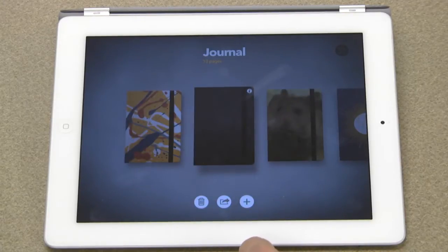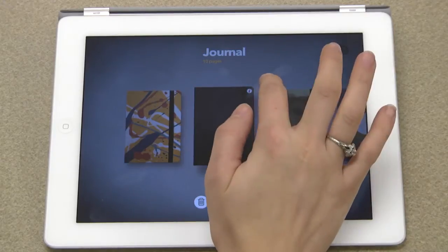To create a new journal, tap the plus icon. To edit the settings of your notebook, tap the eye icon in the top right corner.